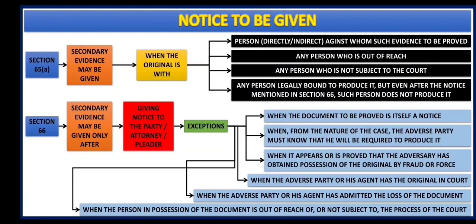The second exception is when, from the nature of the case, the adverse party must know that he will be required to produce it. Now the adverse party knows that there is a particular document which needs to be produced to the court, but even then if such adverse party is not producing it, in that case secondary evidence may be given.